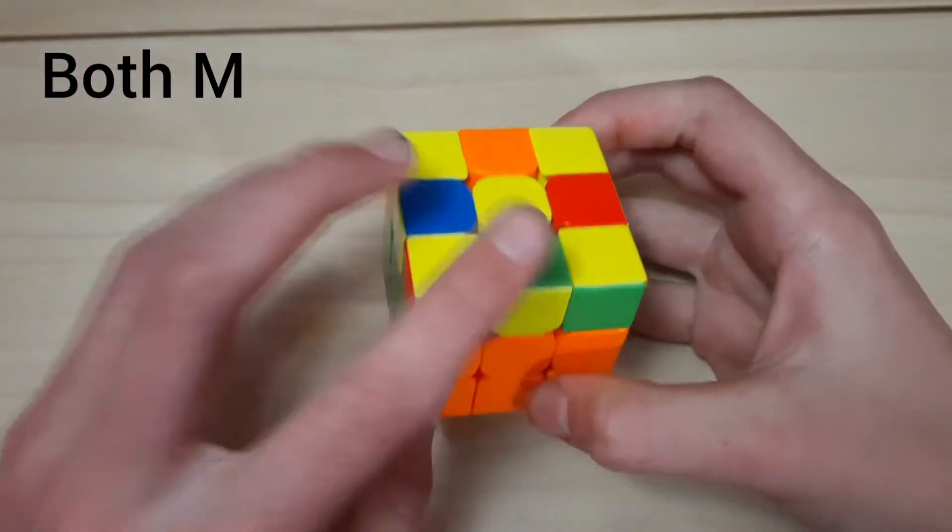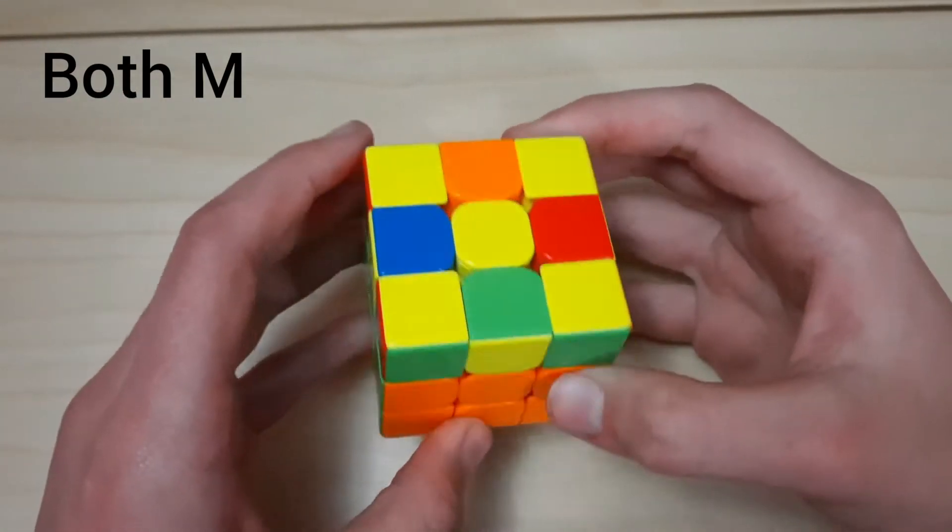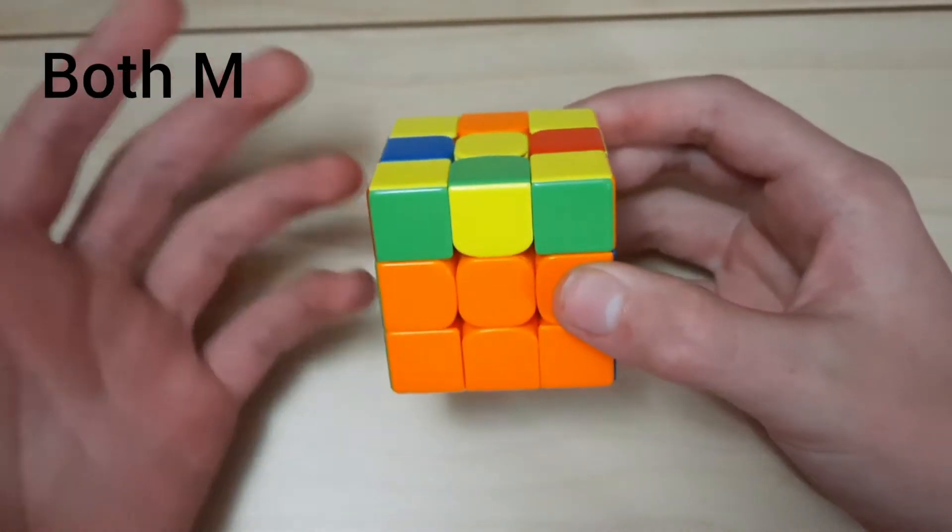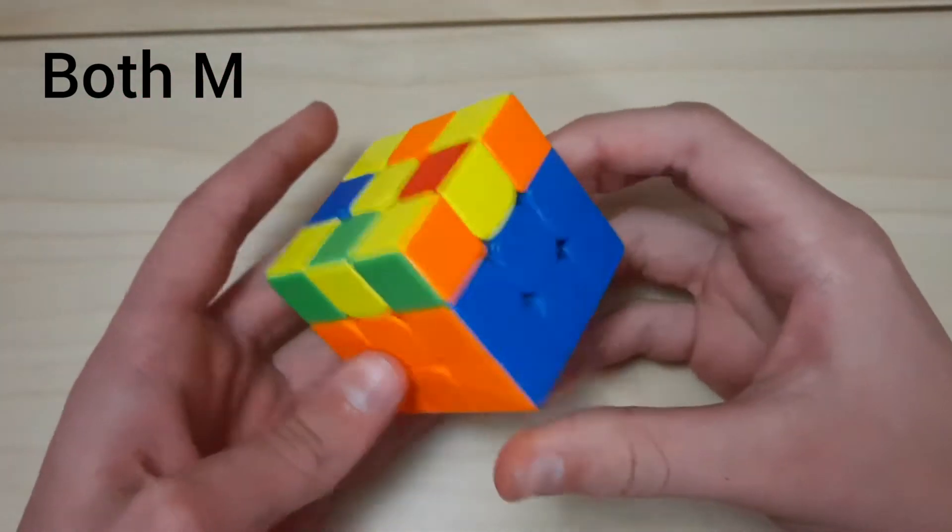This next case is where they're adjacent, and this is one of the worst ELR cases. There's not a very good way to set up into a good arrow. We're just going to have to take the L on this one and set up into a mediocre arrow.